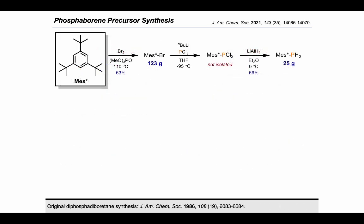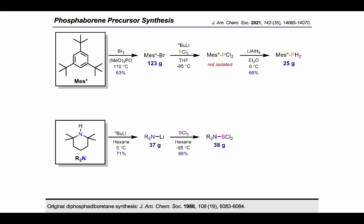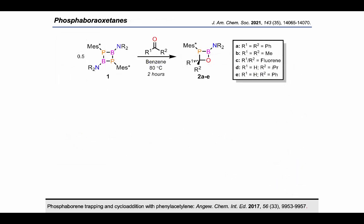The diphosphodiborotene starting material can be prepared on a multigram scale in several steps: first by bromination of 1,3,5-tri-tert-butylbenzene, followed by lithium halogen exchange, salt metathesis with phosphorus trichloride, and reduction with lithium aluminum hydride to give the primary super mesityl phosphine. The boron component is easily accessed from lithium TMP and boron trichloride. Combination of these precursors after in-situ lithiation and silylation of the phosphine gives the diphosphodiborotene as a yellow crystalline solid which is indefinitely stable in the solid state under an inert atmosphere.